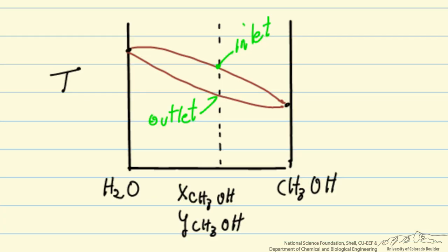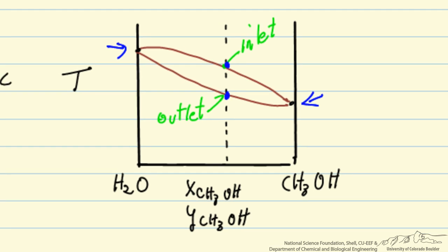First let's look at what we are doing on a TXY diagram. We are starting here, the inlet is at the bubble point. This is a constant pressure plot, pure methanol here has a lower boiling point than pure water over here, and we are going from this inlet to this outlet, and the question is what is the delta H, so therefore calculate Q.